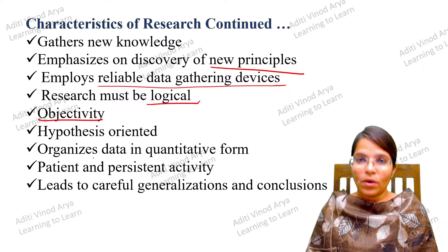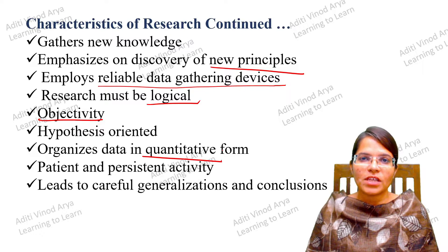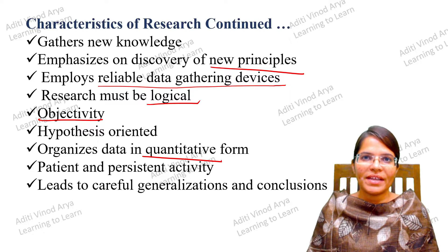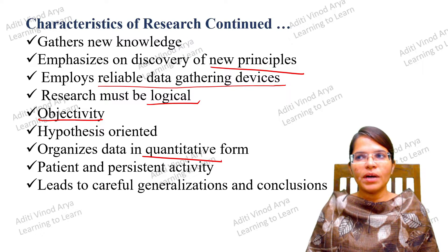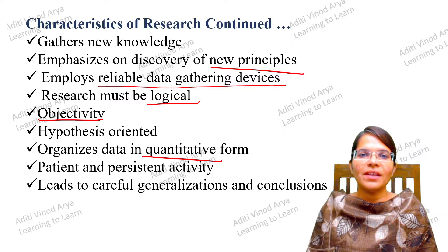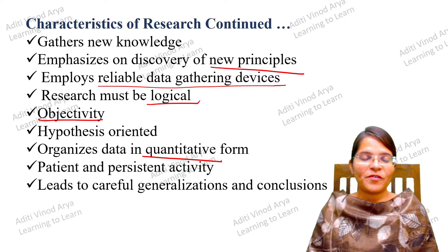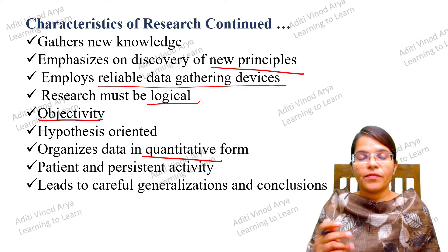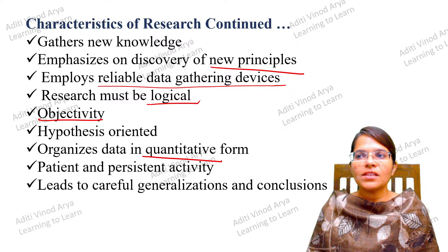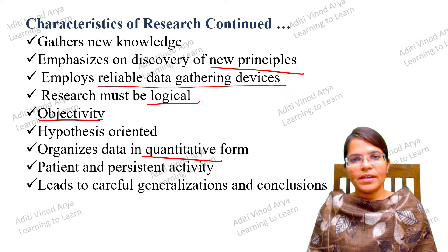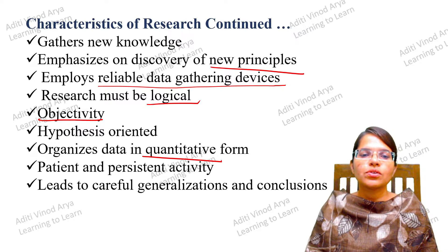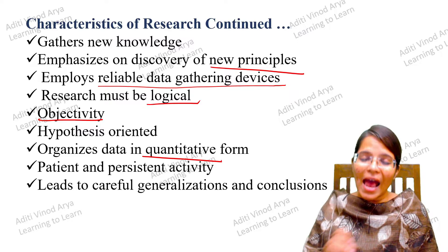Research organizes data in quantitative form as much as possible. Many research studies are qualitative in nature — for example, you cannot give a number to sadness or depression. But researchers try to quantify even qualitative data, such as using Likert-scale options like 'slightly agree,' 'strongly agree,' 'slightly disagree,' 'strongly disagree,' and 'neutral.' These help understand the range and bring us closer to a measurable amount.